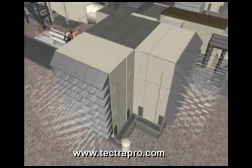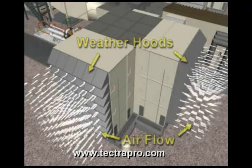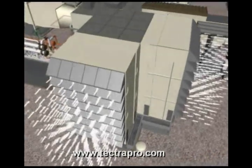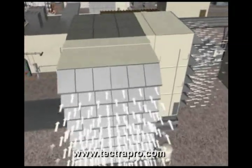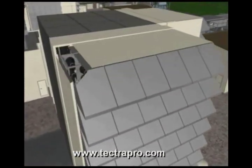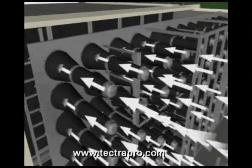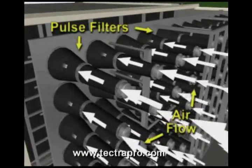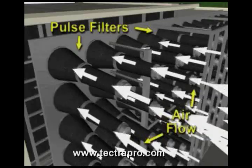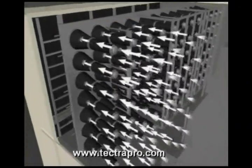The incoming air to the combustion turbine first goes through a weather hood to a filter housing. The weather hoods protect the filters from the effects of rain and sun and help minimize the amount of debris drawn into the filters. The air is drawn into and through the filter canisters. These filters remove particulates from the incoming air before it is admitted to the compressor inlet.